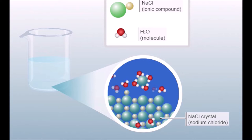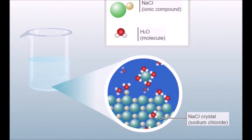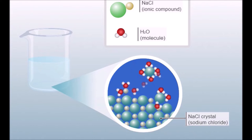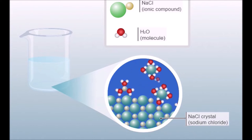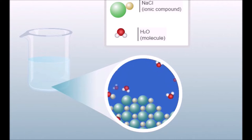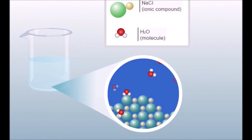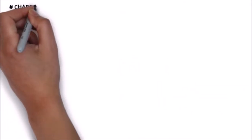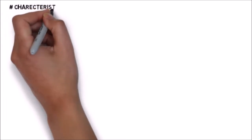When we dissolve salt in water, the particles of salt get into the space between particles of water, so the water level does not rise. This is the proof that matter is particulate in nature. Here we will study certain characteristics of particles of matter.